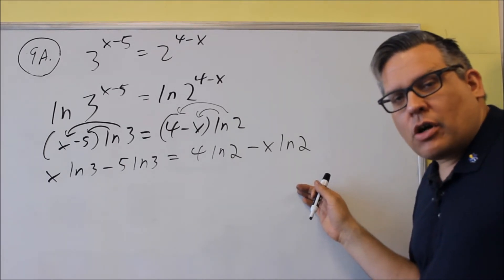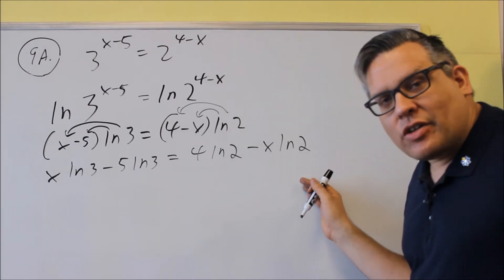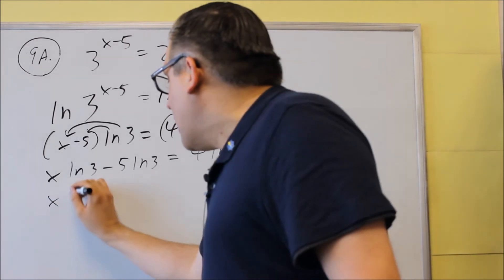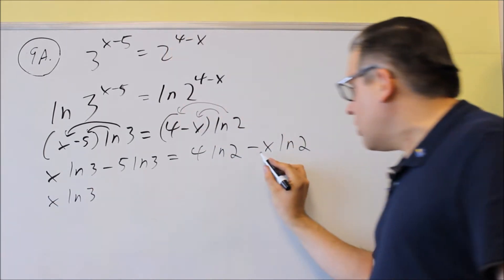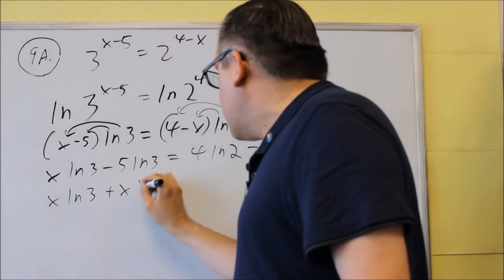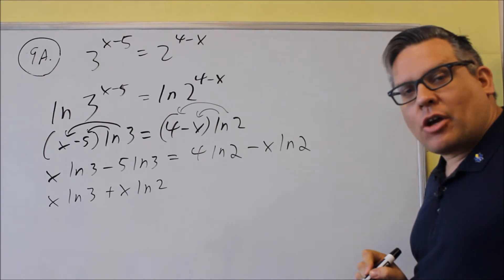Now is the point where you want to solve it. In order to solve this, we have to get all the x's on one side of the equation. So I'm going to move this one over. So I have x ln 3, but I'm going to add this one over. So I'm going to add x ln 2, so move that across the equal sign, becomes positive.